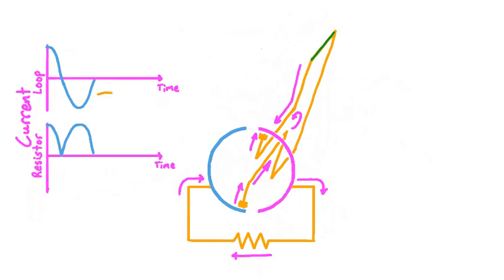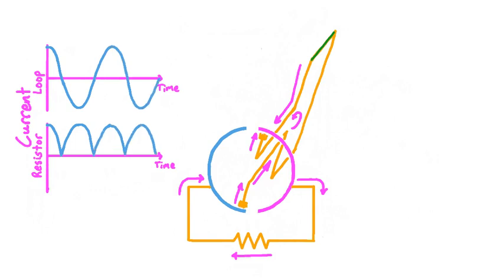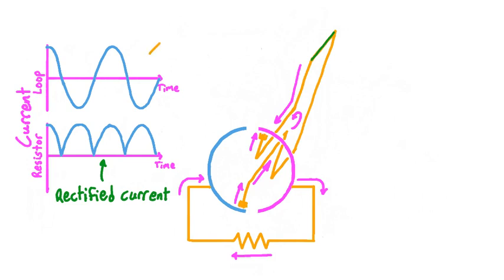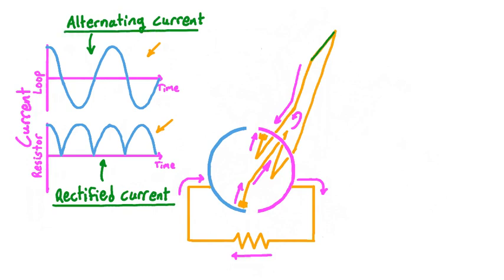This will continue for the next half turn with negative current in the loop and positive current in the resistor. Then, as the current again reaches zero because the loop is vertical, the brushes in the commutator will again align with the gap between the two halves of the ring. After this point, the current in the loop will again be positive, and the brushes will again swap electrical connections, so the current in the resistor will remain positive. The current in the loop will continue to cycle between positive and negative values, but the current in the resistor will always be positive — or zero when the current in the loop is also zero. We call this a rectified current, and mathematically the graph representing the rectified current is just the absolute value of the graph representing the alternating current.